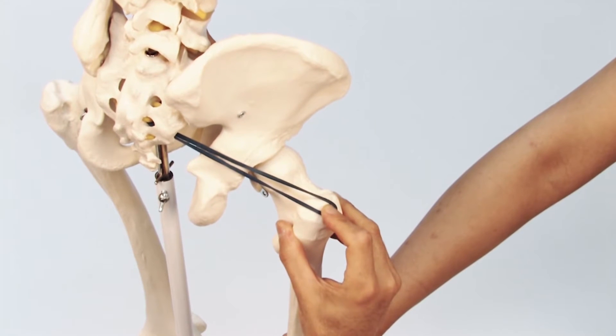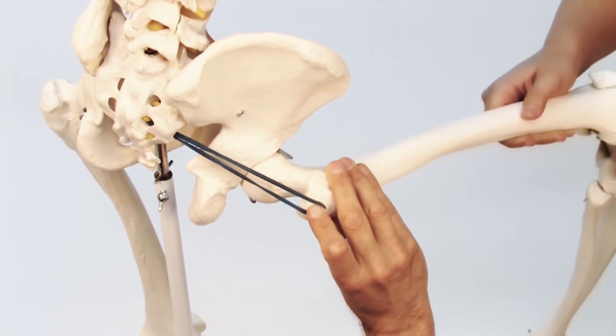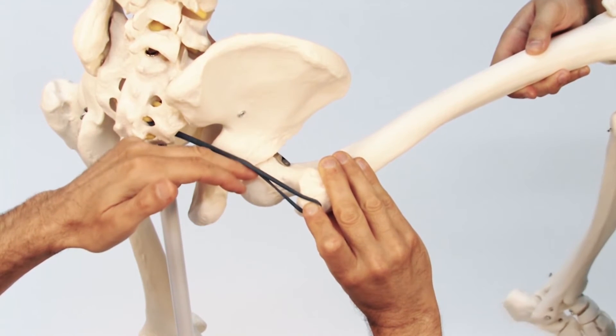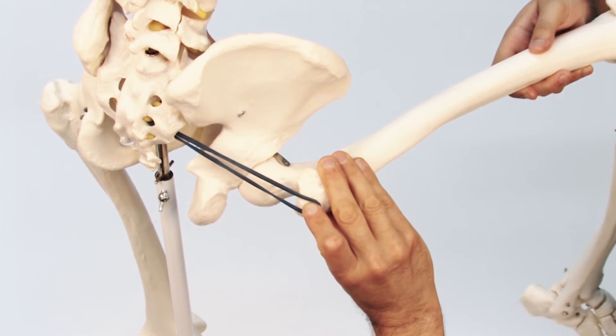If instead the thigh is first flexed approximately 60 degrees or more, the line of pull of the piriformis moves to the other side of the joint relative to the axis of motion in the transverse plane.